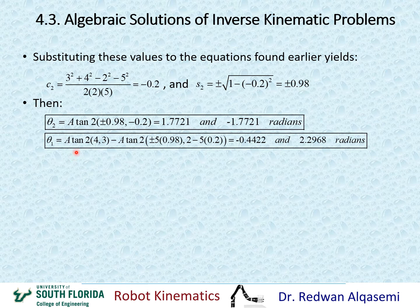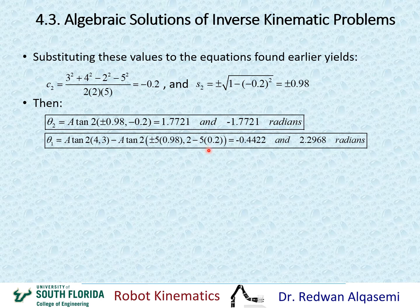For theta1, we evaluate atan2(Y, X) − atan2(L2·S2, L1 + L2·C2) = atan2(4, 3) − atan2(5·(±0.98), 2 + 5·(−0.2)). Using the positive S2 gives theta1 = −0.4422 radians (solution one), and using the negative S2 gives theta1 = 2.2968 radians (solution two).